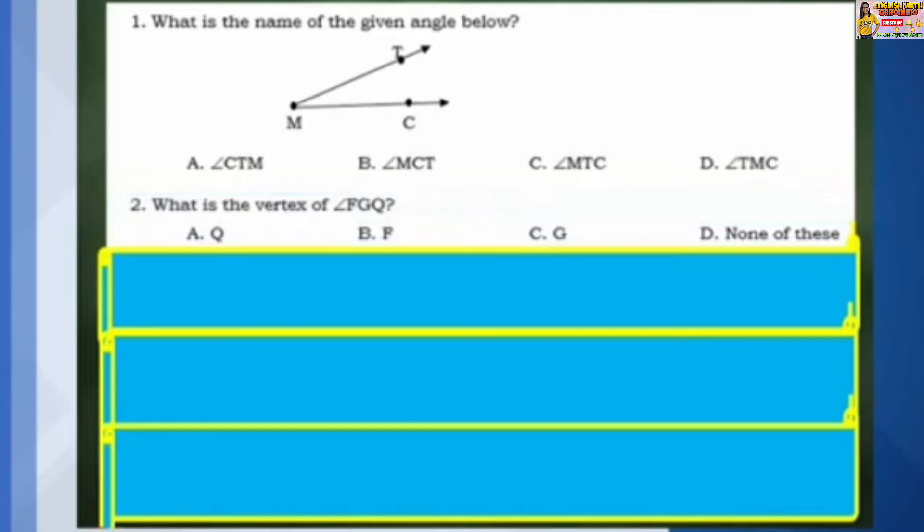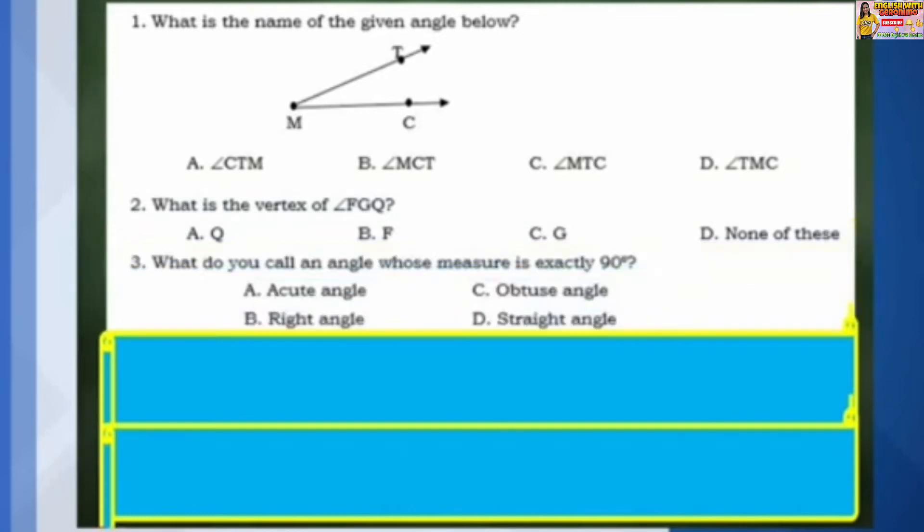Number 2: What is the vertex of angle FGQ? A: Q. B: F. C: G. D: None of these.